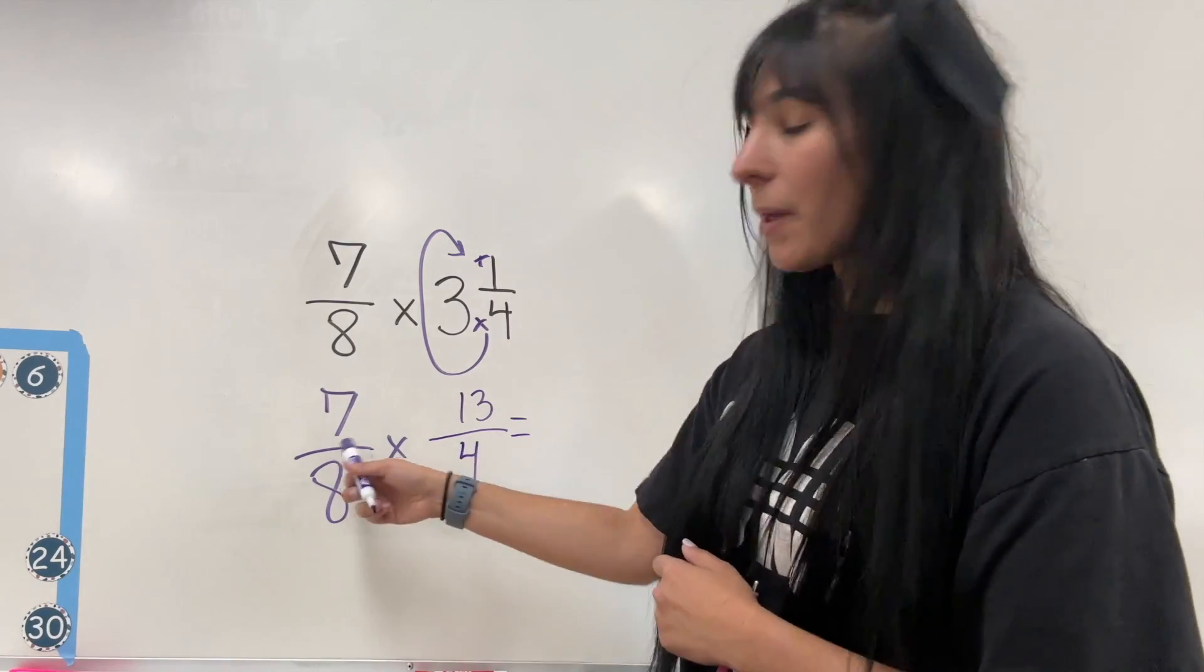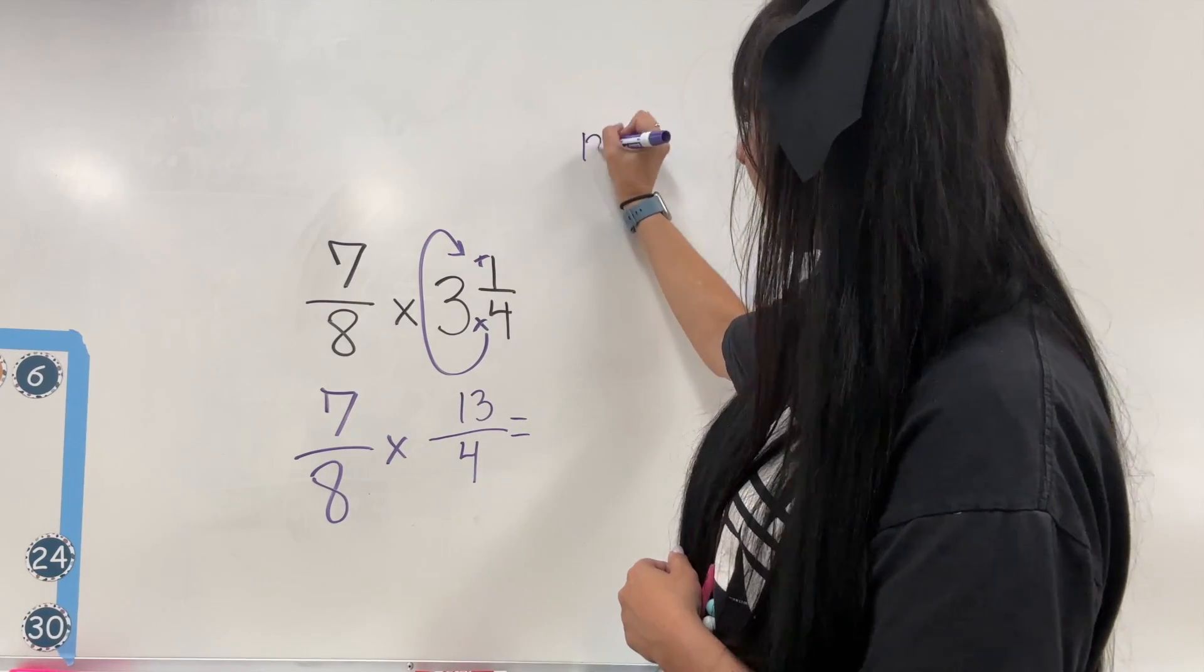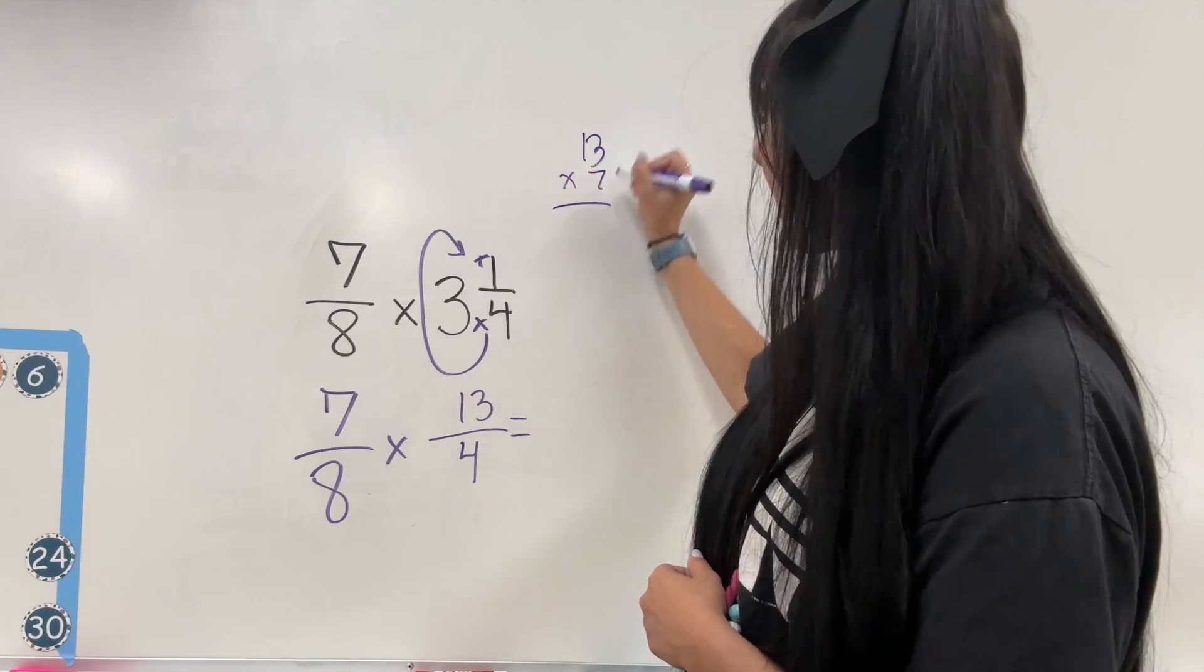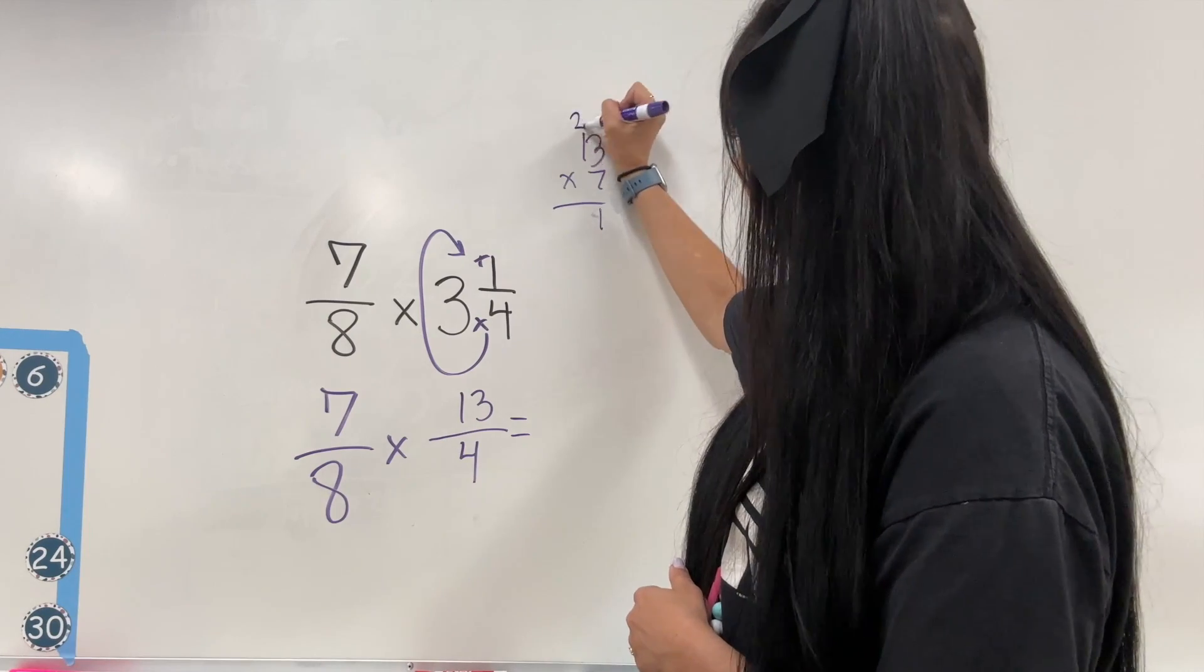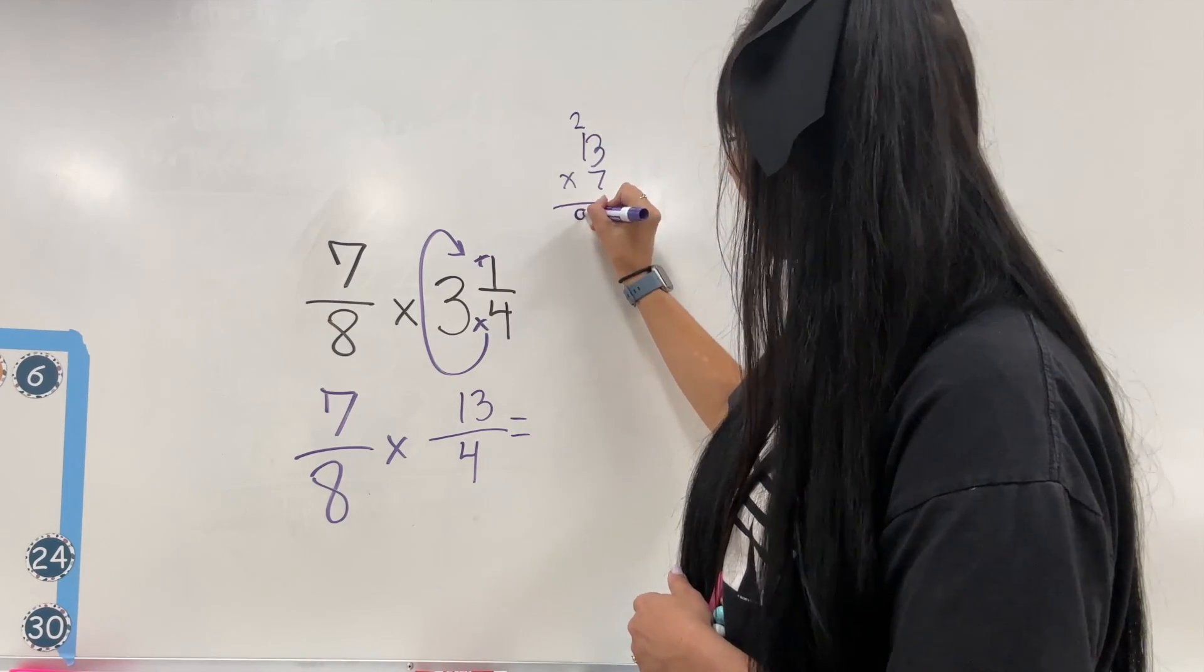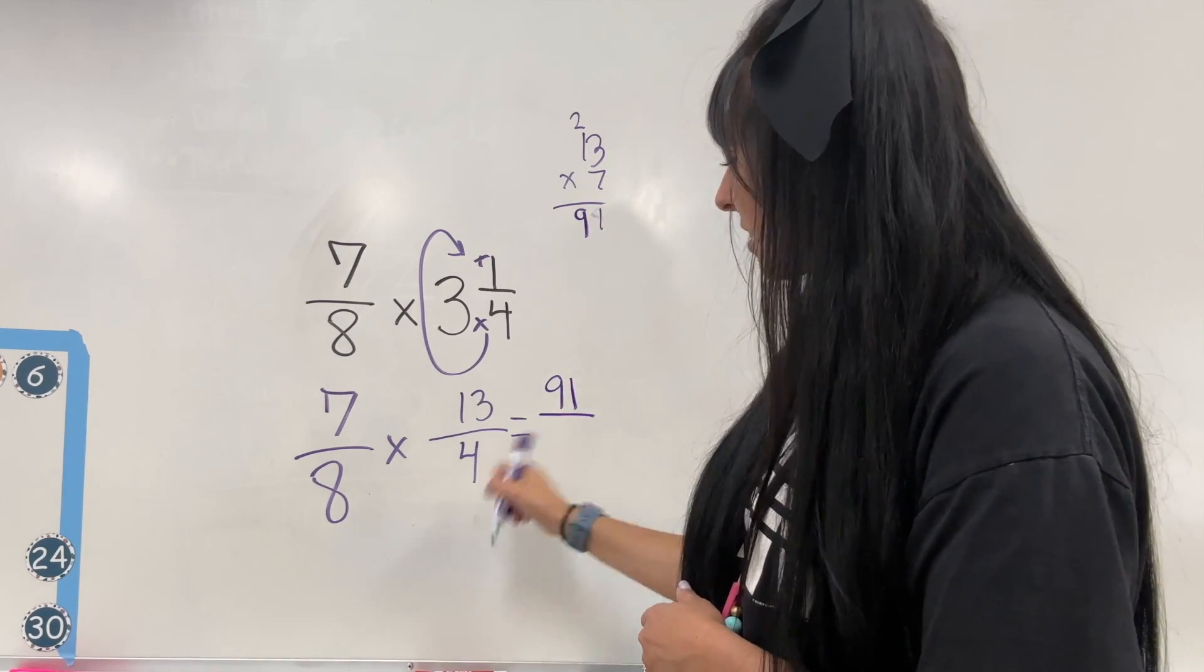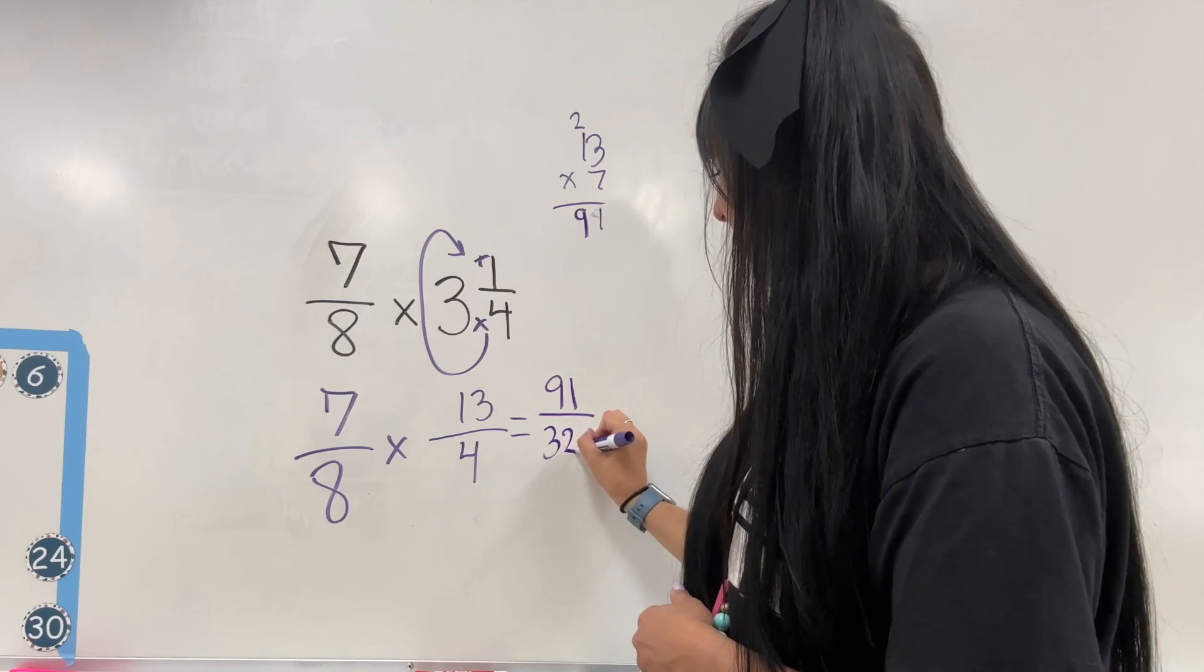And then I'm going to multiply across like normal. So seven times 13, I'm going to go ahead and solve that. Seven times three is 21, plus seven times one is seven, gives me nine. Wait, seven times 13 is 91. So I'm going to have 91 over, eight times four is 32.